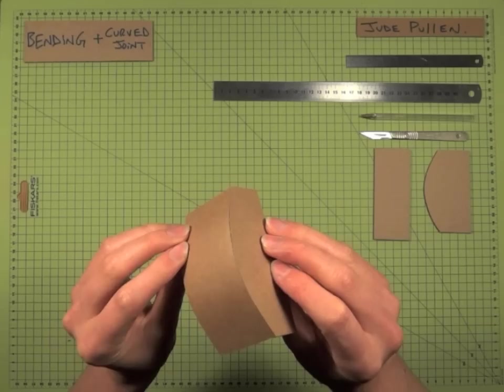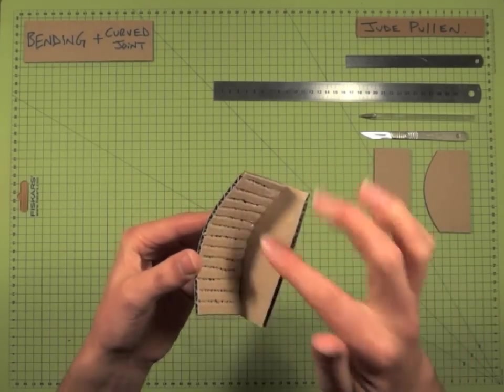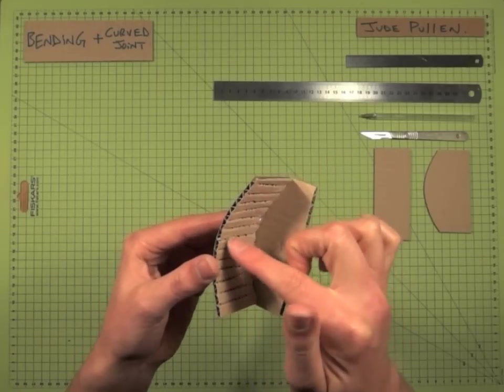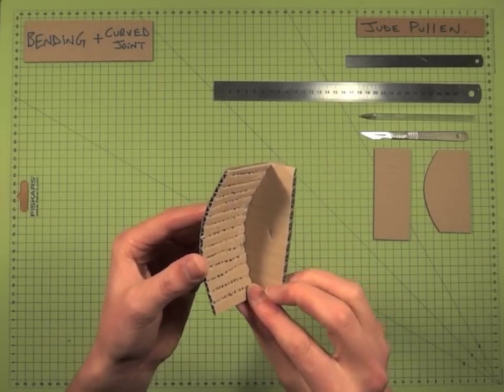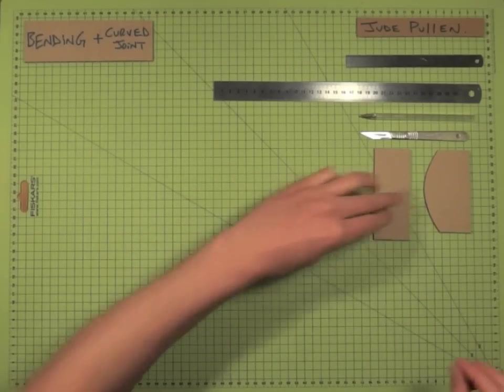First thing you need to know is how to bend it, and as you can see in here, even though it's a little bit messy on the inside, it doesn't really matter as you're not going to see it. So we've just damaged, carefully, parts of the corrugated cardboard to allow it to bend. So we'll do that.